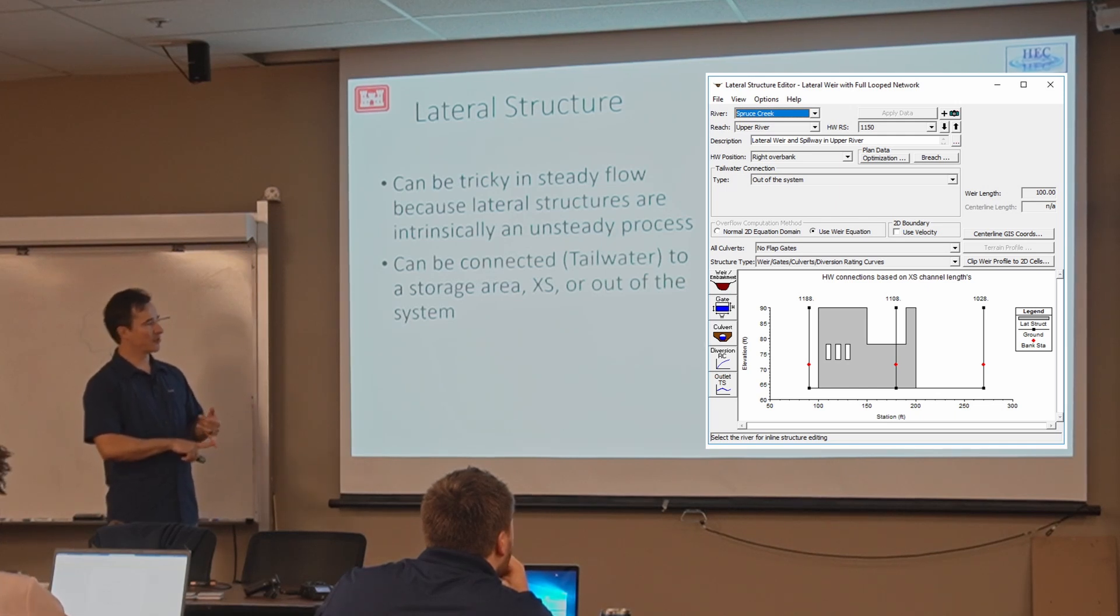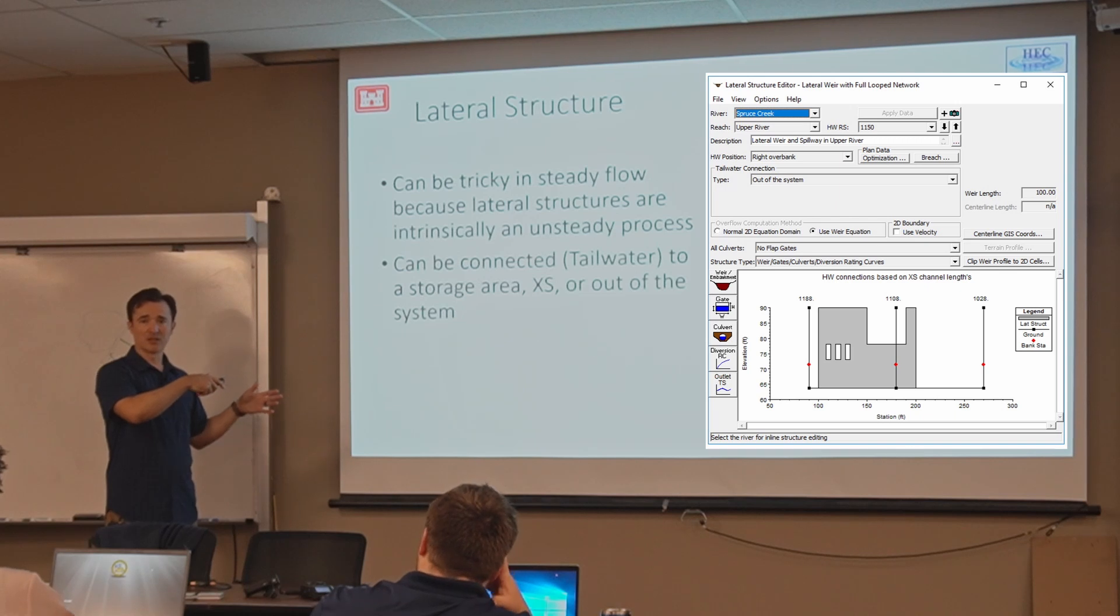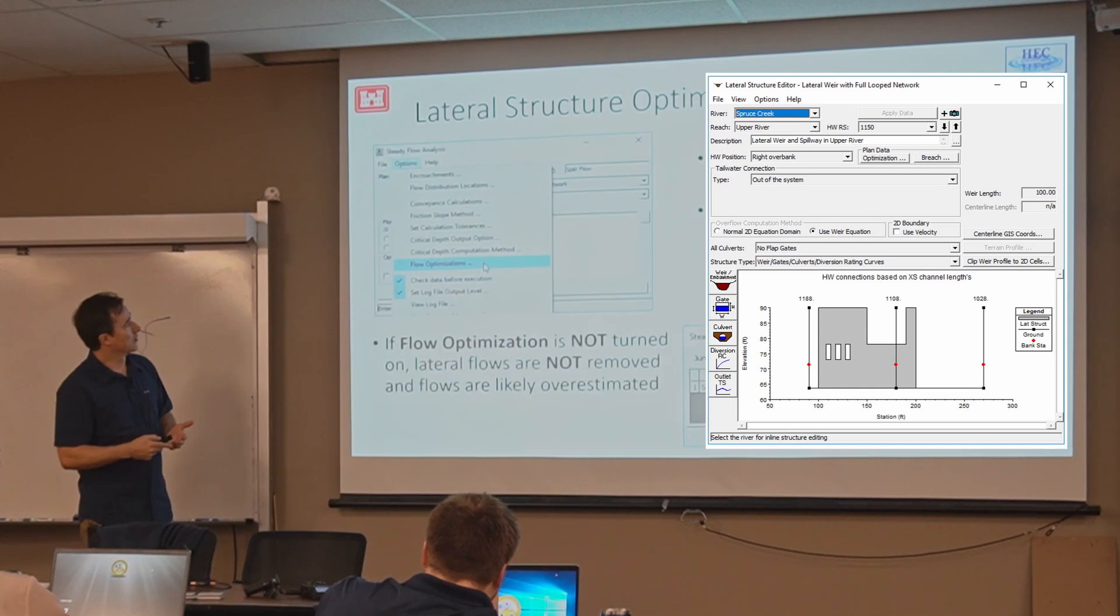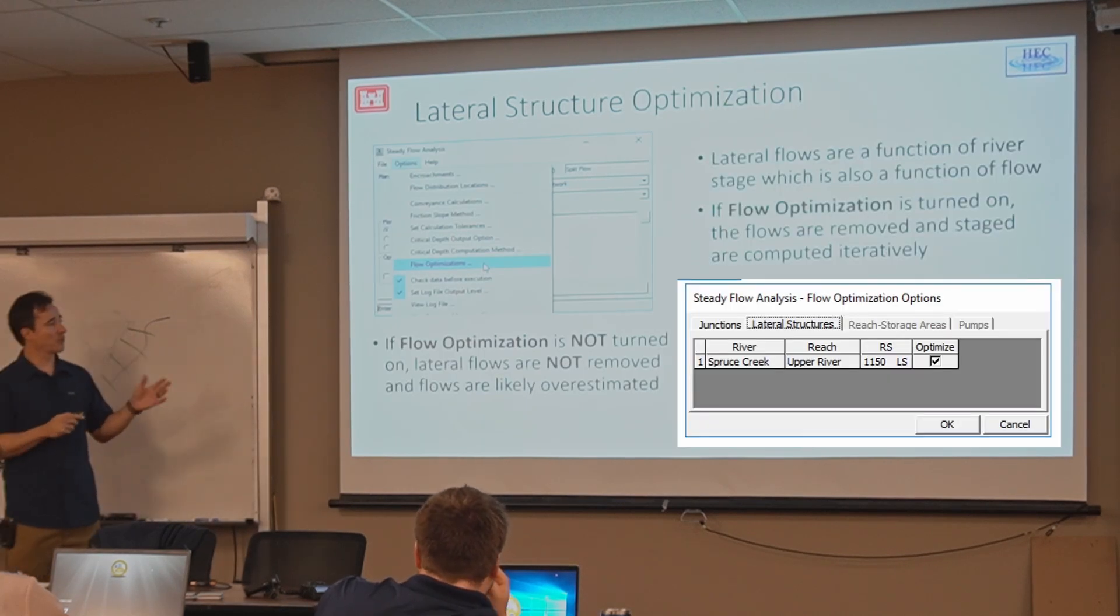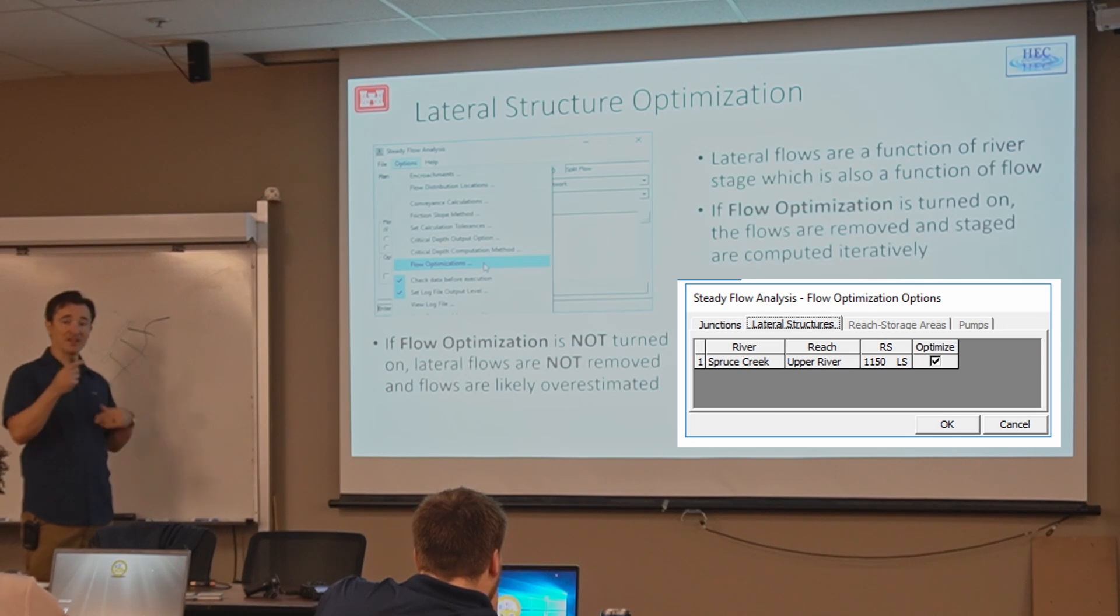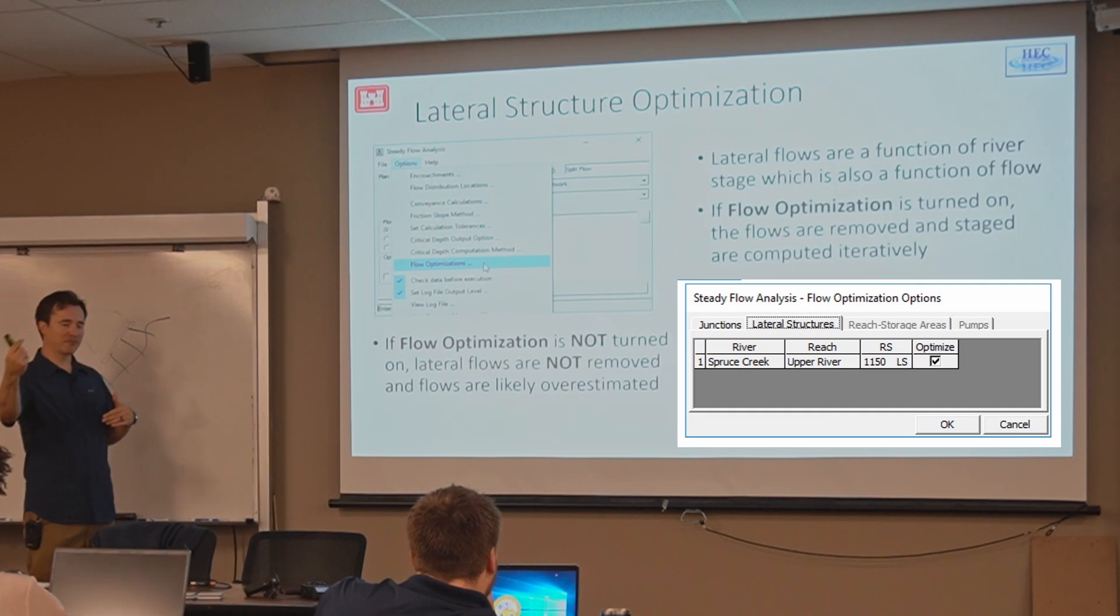And it's going to compute flows along that lateral structure using the station elevation data that you specify and whatever structures you put in there, like gates and culverts. And the gates, if you put them in, they're going to have like an opening position and all that. And it'll just take flow out of your river. And that's tricky because the flow through the structure is actually a function of the stage in the river. So that's an unsteady process. And in a steady model, how do you take care of that? Well, there's two ways of doing structures. You can do it with optimization where the model tries to compute the flow at the structure and then take that flow out of your main stem and then iterate.